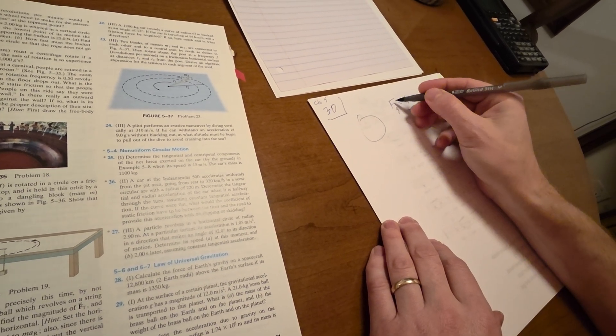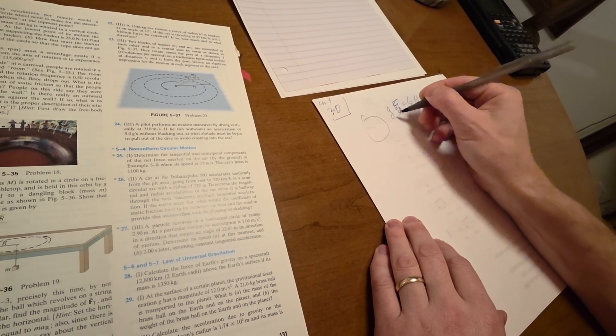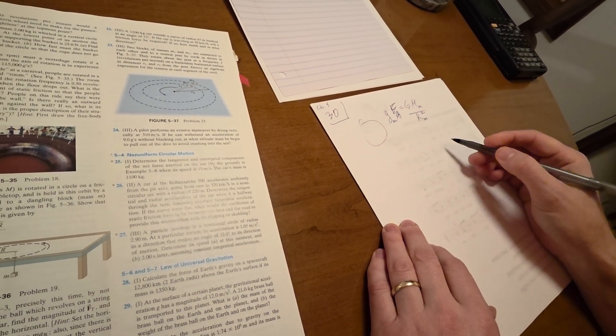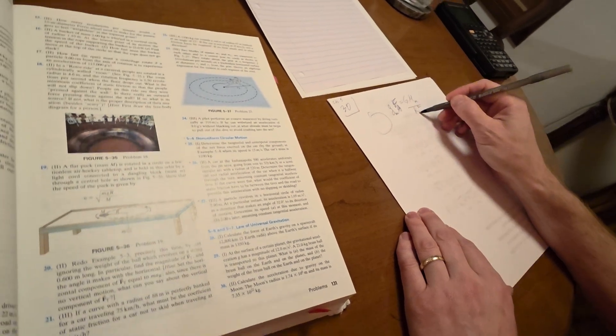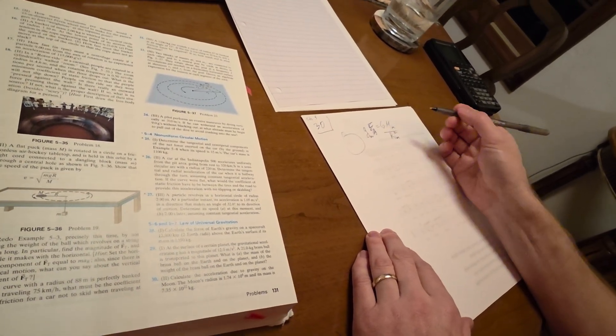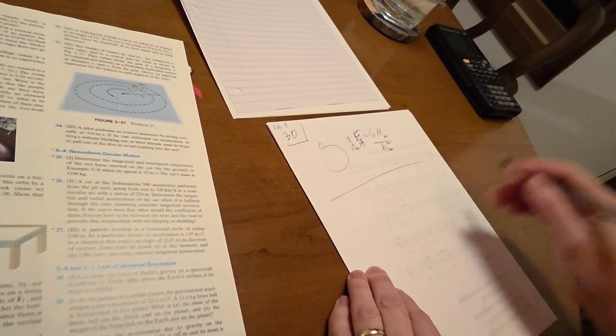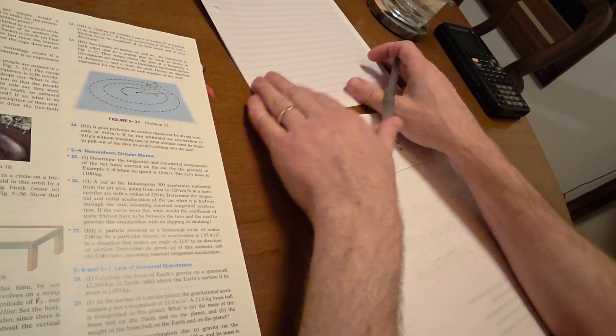I've got Fg equals G m moon over r moon squared. Not Fg, I meant to say g moon. There we go. And let's see. So I need to know, I got the radius, I've got the mass, I know what G is. I think I'm done with that one. Boom. Let's do the next one. What's the next problem?